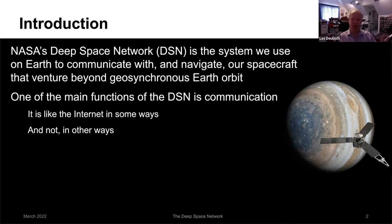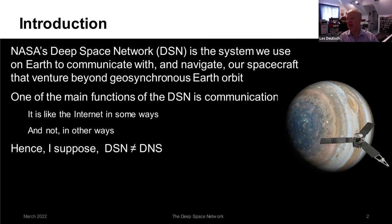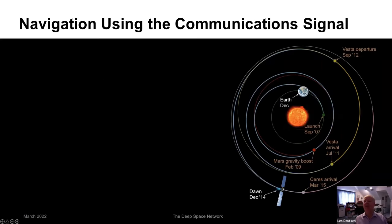One of the main functions of the DSN is communications — similar to the internet in some ways, and different in others. With some humor, he notes the DSN is not equal to DNS. The DSN is also the primary mode of navigating all deep space spacecraft, because there is no GPS in deep space.